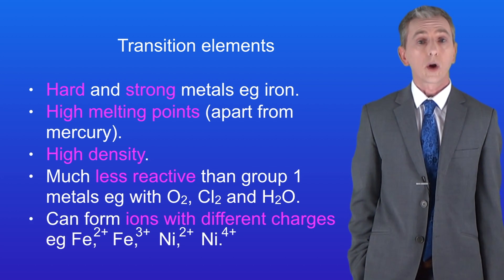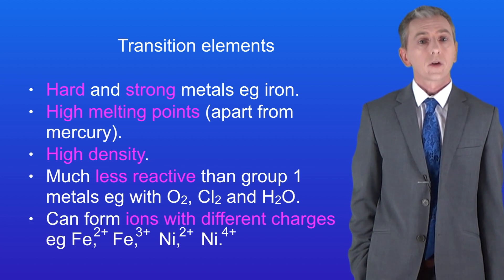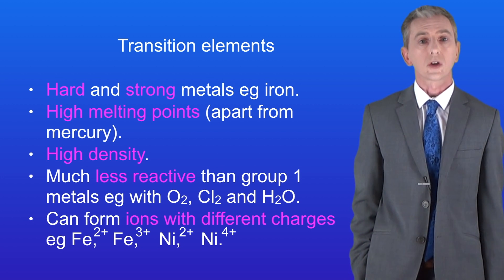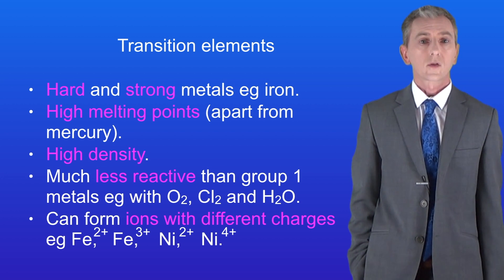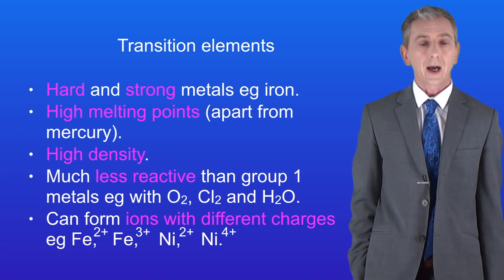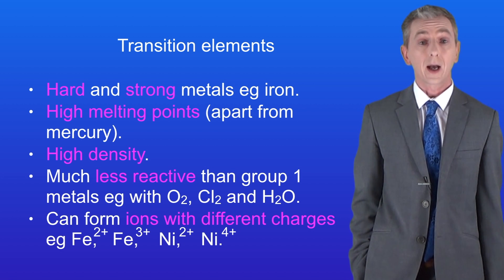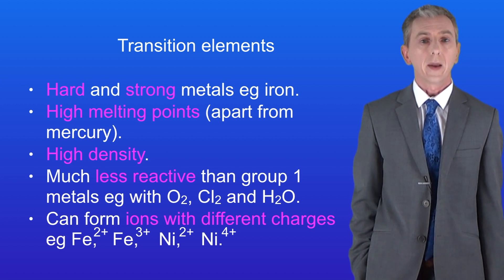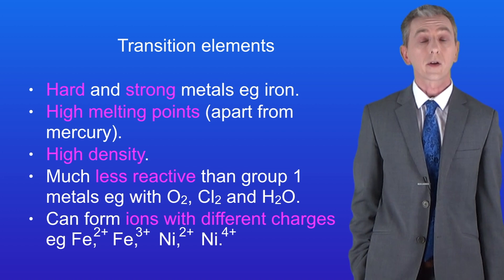Unlike group 1 metals, transition elements can form ions with different charges. So we can see iron forming a 2+ and a 3+ ion, and nickel forming a 2+ and a 4+ ion.